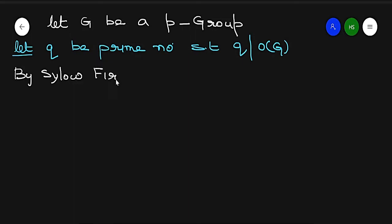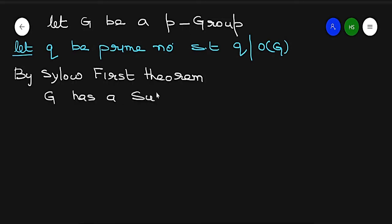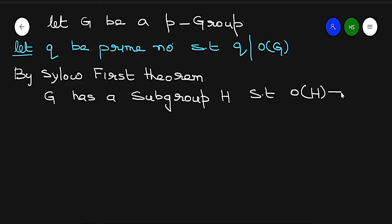By Sylow's first theorem, G has a subgroup H such that the order of H is equal to q.